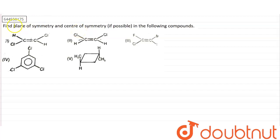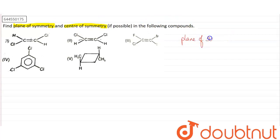Hello students. In this question they have asked to find the plane of symmetry and the center of symmetry in the given compounds. We have five compounds and we have to find the plane of symmetry and center of symmetry. For plane of symmetry, we actually cut our compound into two halves so that they can be mirror images of each other — exact same mirror images.